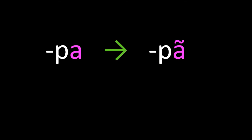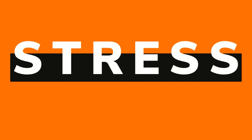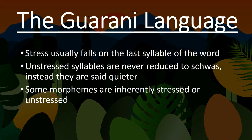But what about stress? In Guarani, stress normally falls on the last syllable of a word, unless a morpheme is inherently stressed or unstressed. And unlike many other languages, unstressed syllables never change in vowel quality. Instead, they just get quieter, but for the same duration.